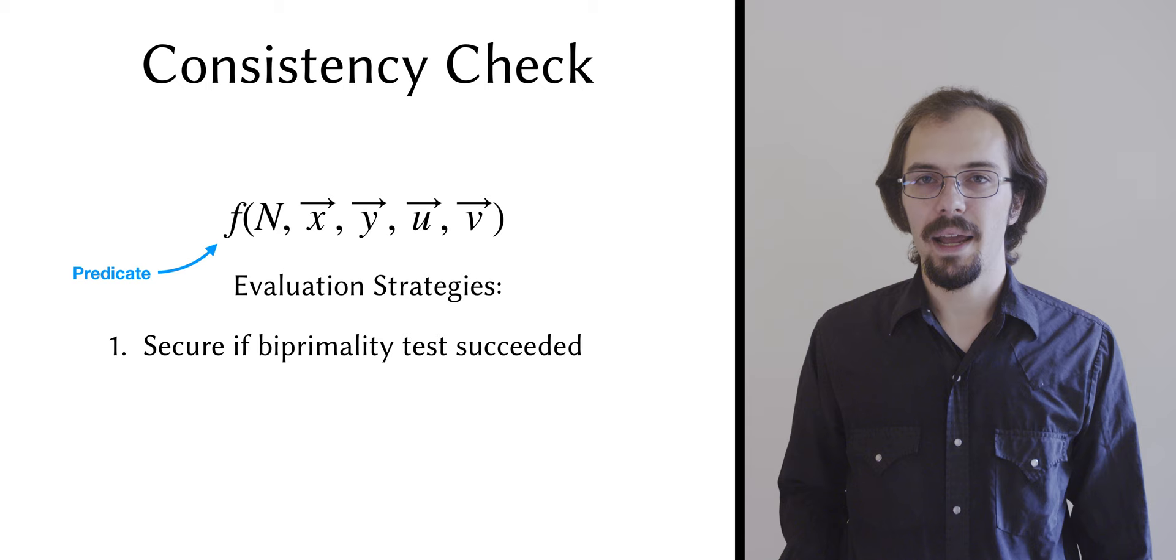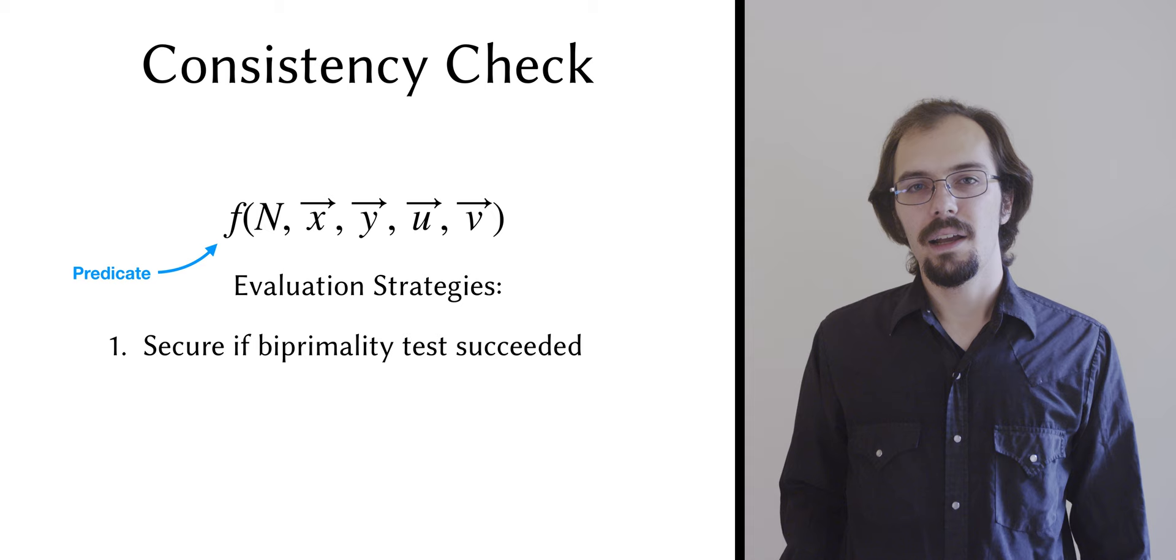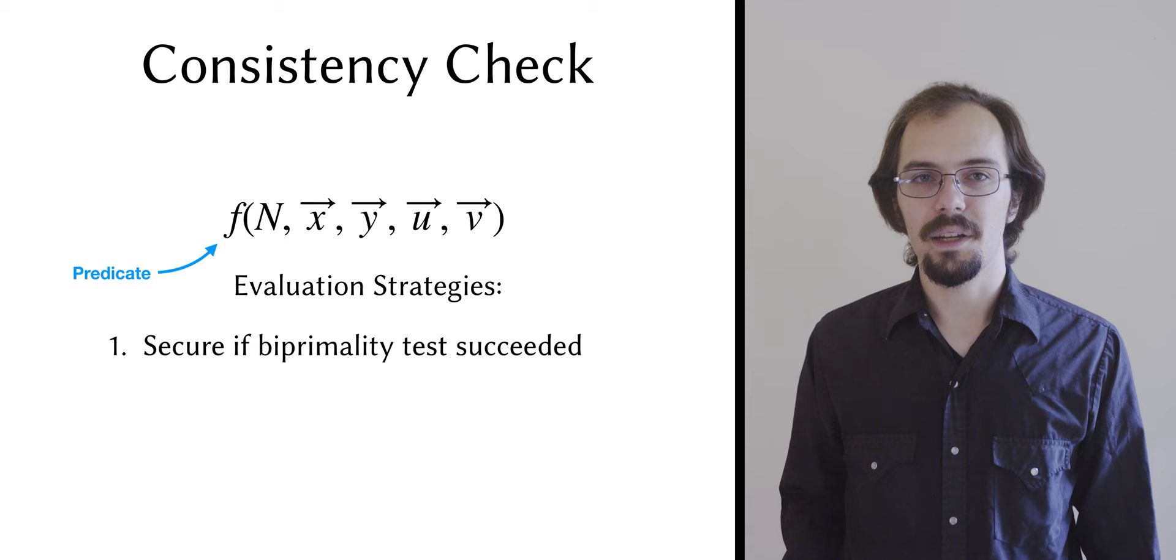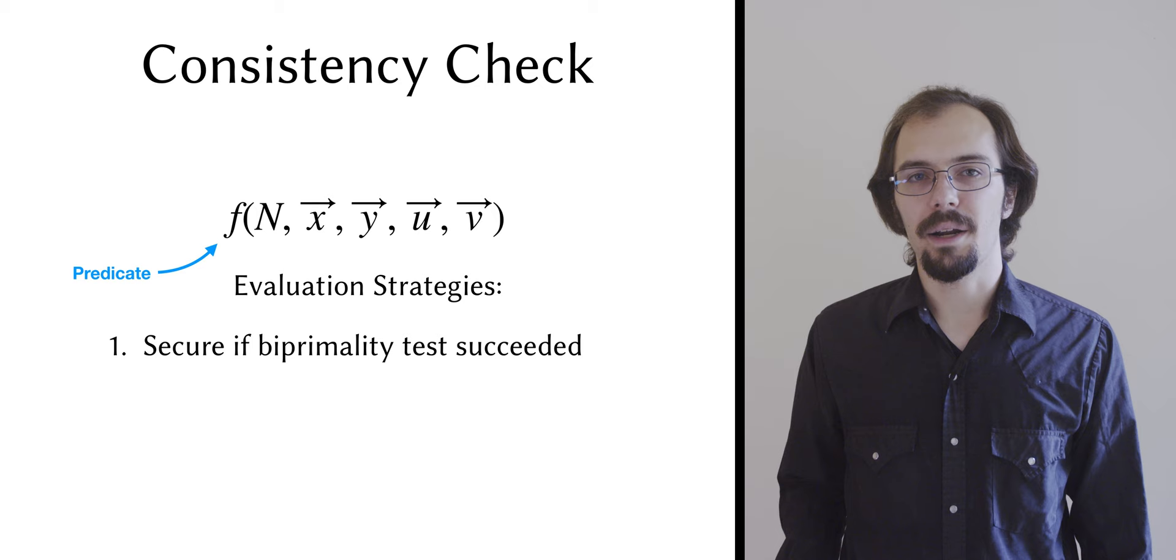If the biprimality test passed, then n might be our output, so we evaluate this predicate securely. In the current version of the paper, we use generic MPC for a canonical instantiation, but it's conceivable that this can be improved with tailored protocols. This can be comparatively slow, but we only have to do it when we succeed.